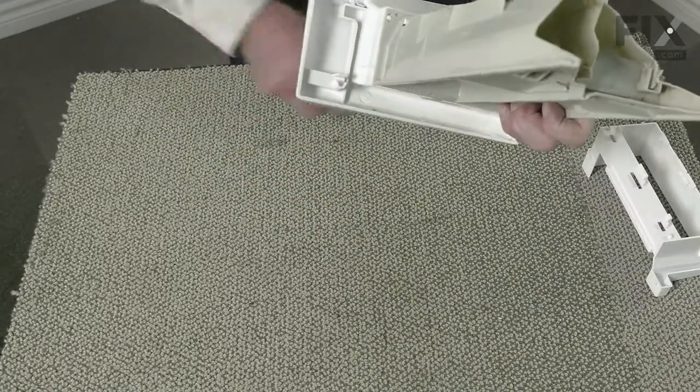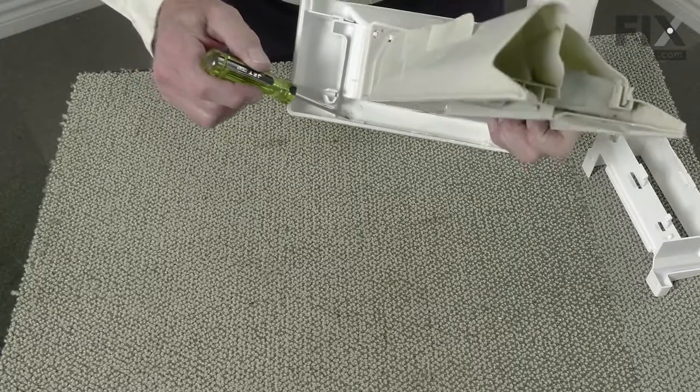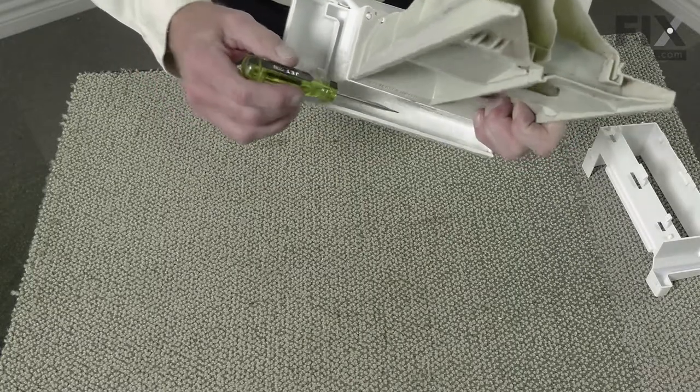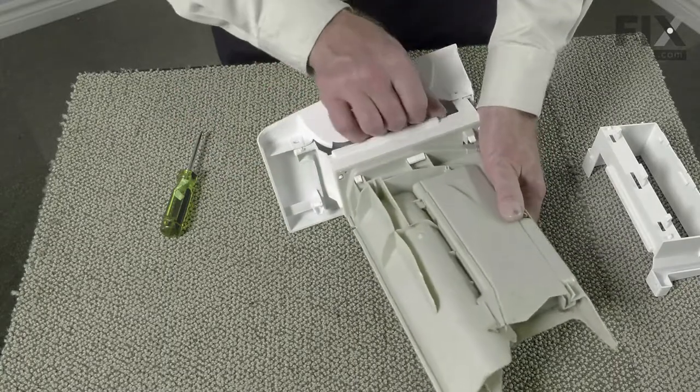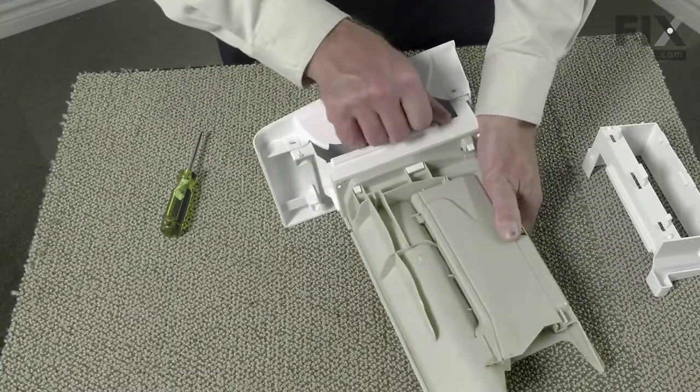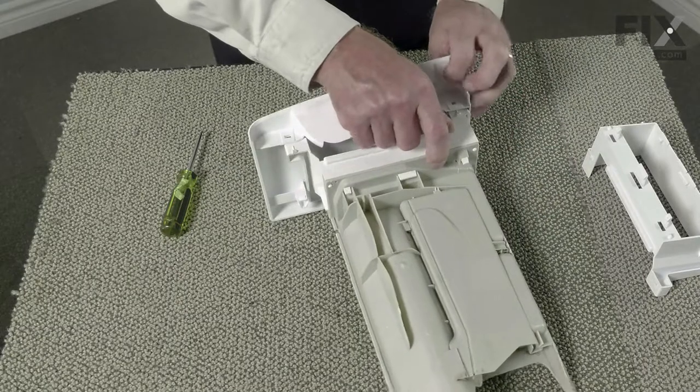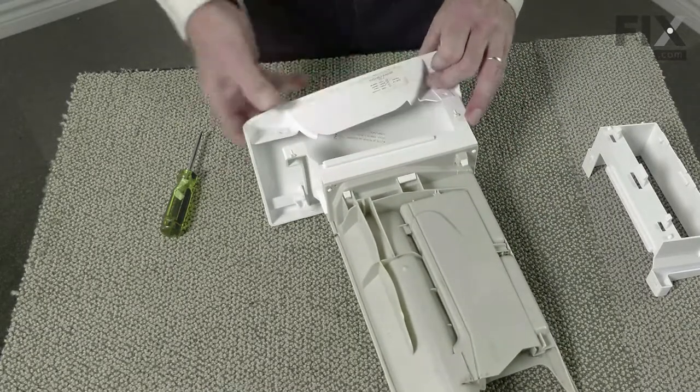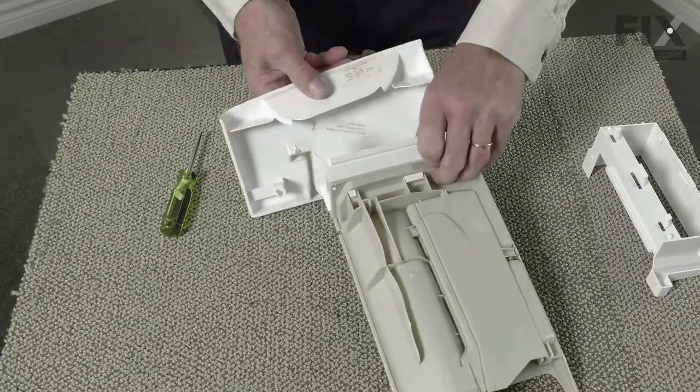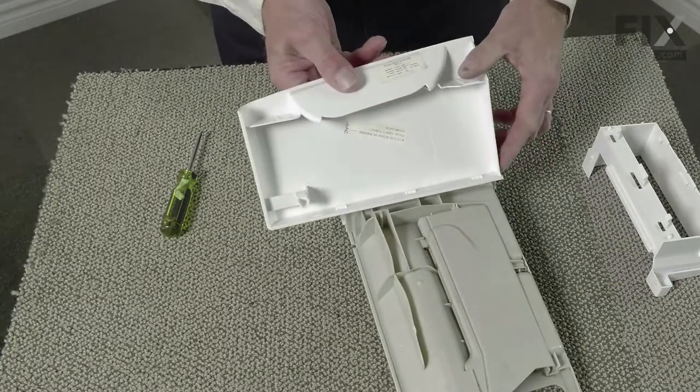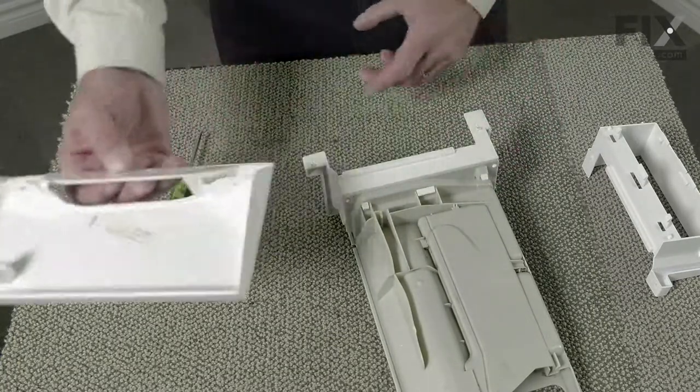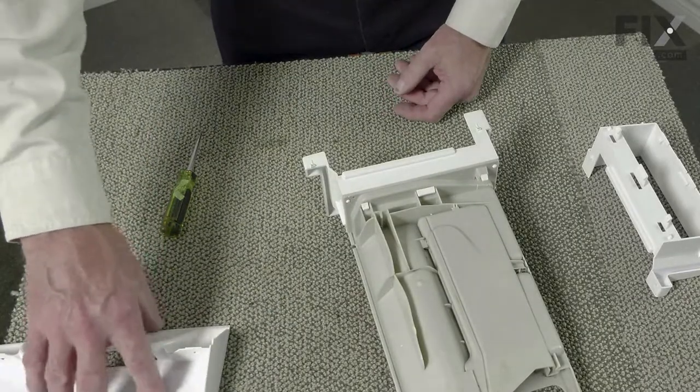We'll note that there are also three little hooks across the bottom. Once we tilt this forward it should disengage from those. These are the three little tabs across the bottom. We'll set that front panel aside.